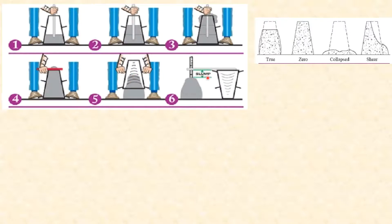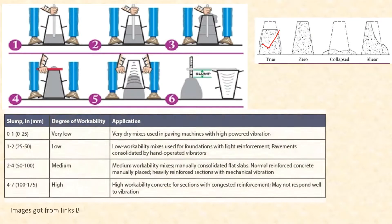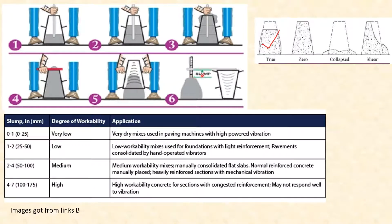This measurement is the slump. The cone height is 150mm (6 inches). A slump of 25 to 50mm indicates low workability. This is used for foundation concrete with light reinforcement.